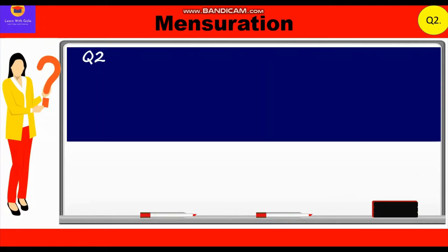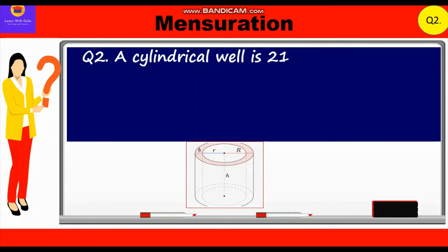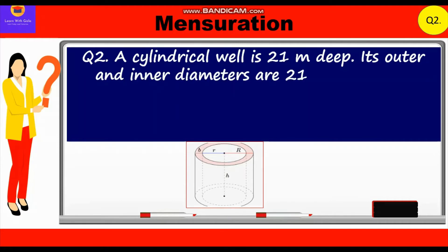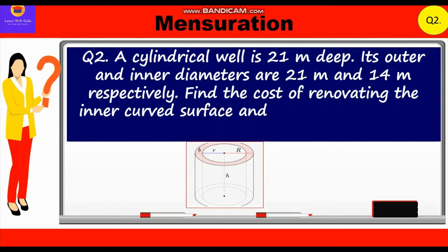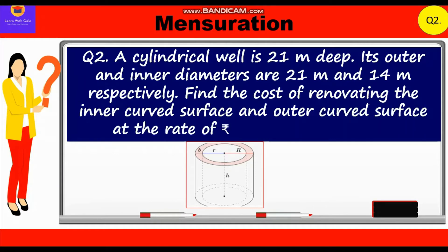Now let's take up the second question. A cylindrical well is 21 meters deep. Its outer and inner diameters are 21 meters and 14 meters respectively. Find the cost of renovating the inner curved surface and outer curved surface at the rate of rupees 25 per square meter.